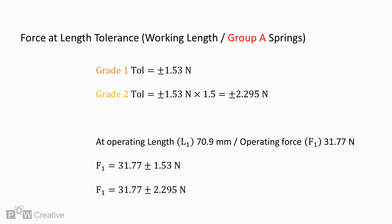The Grade 2 tolerance is derived from the Grade 1 calculation. Simply multiply the Grade 1 tolerance by 1.5 to find the Grade 2 tolerance.